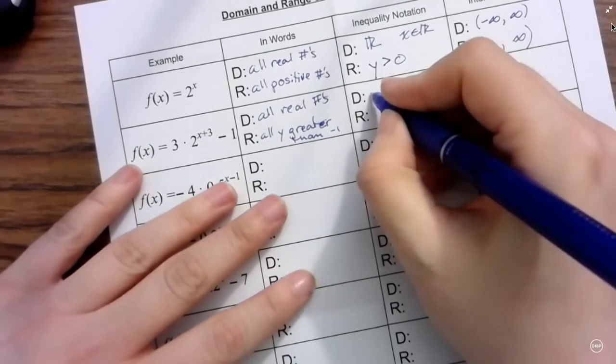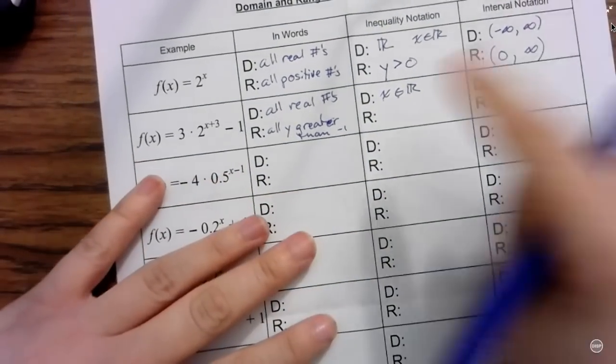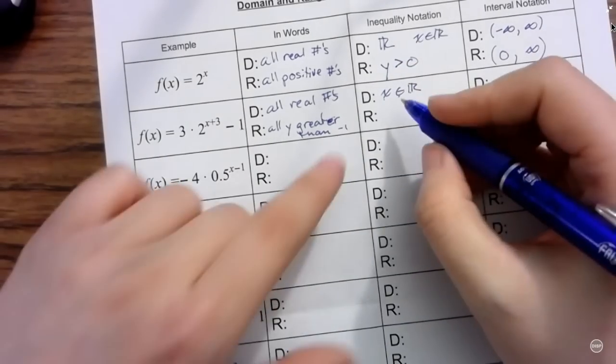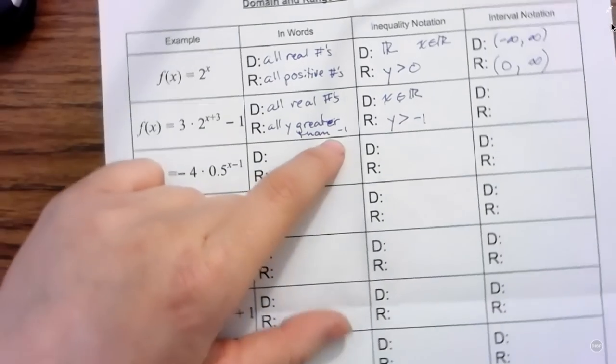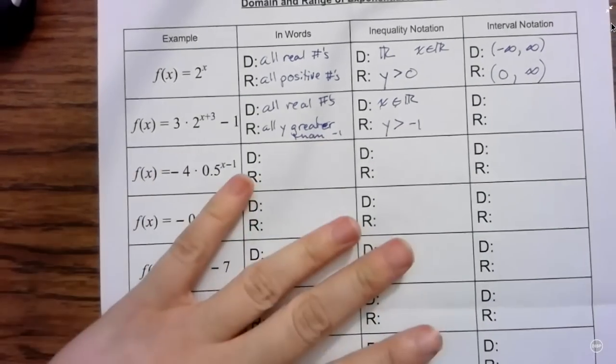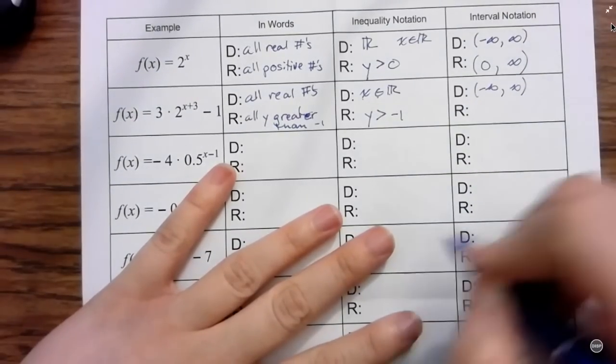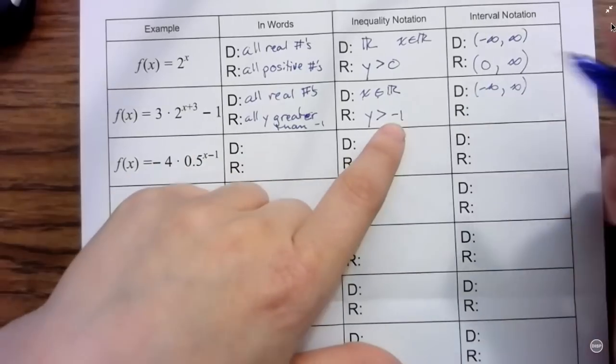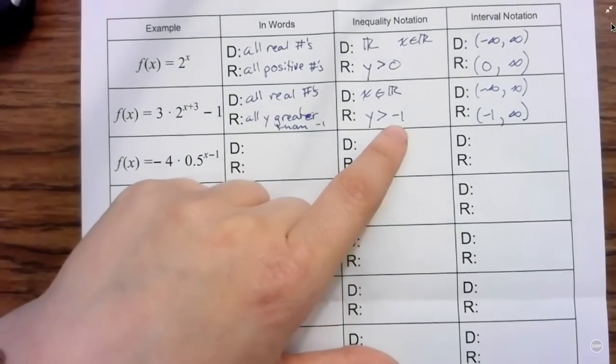So then all real numbers, x can be any real number. X is an element of the real numbers. For our inequality notation, I am going y is greater than negative one this time. And for interval, again, I've got the same domain, negative infinity to infinity. And then my range, I can go from negative one to positive infinity with my y values.